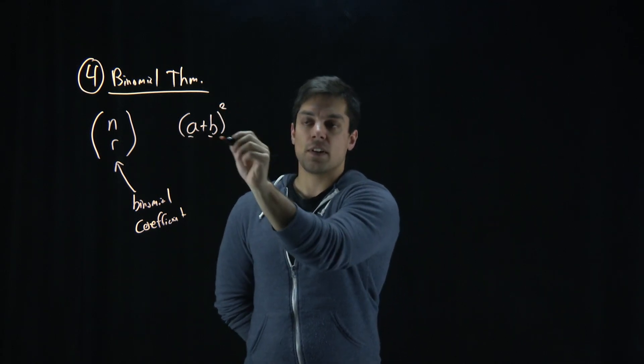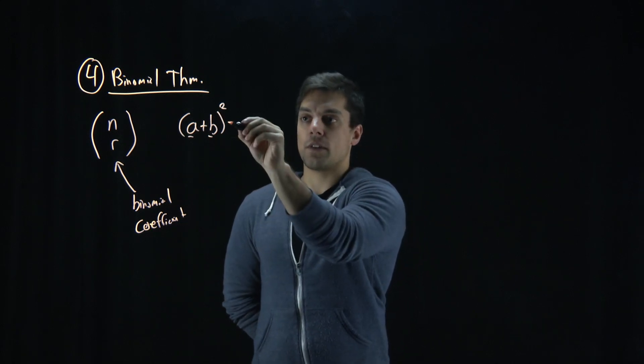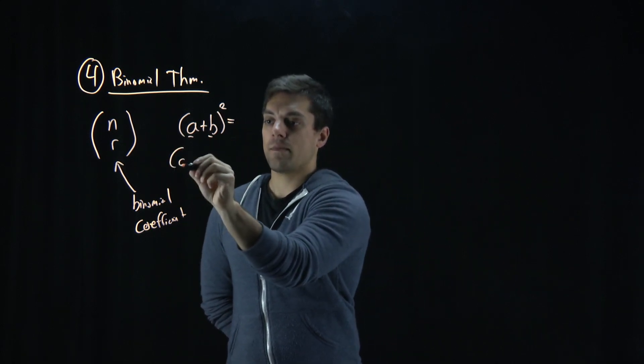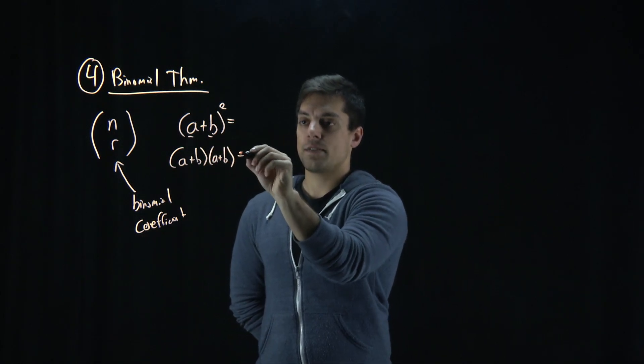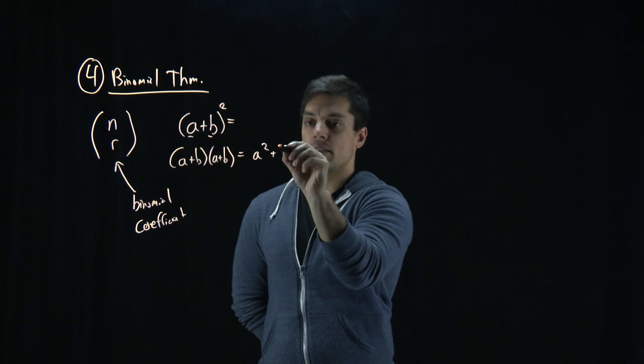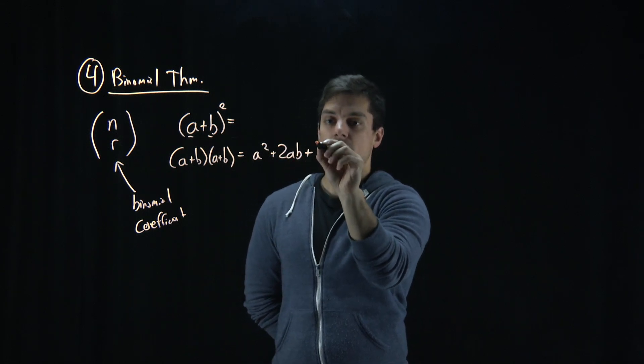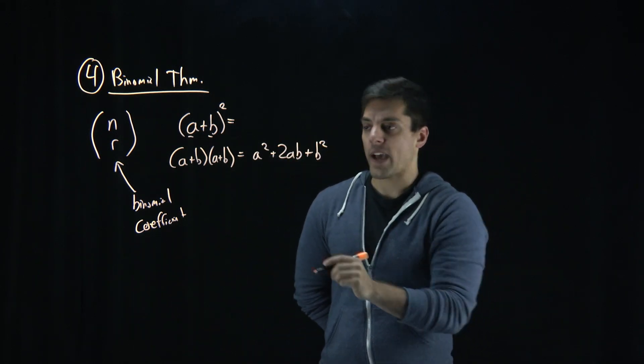And often we've seen a plus b squared, and we have to solve this out as a plus b times a plus b, which is a squared plus 2ab plus b squared. Not too bad.